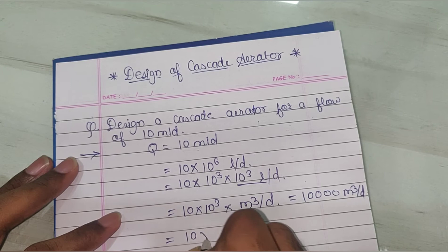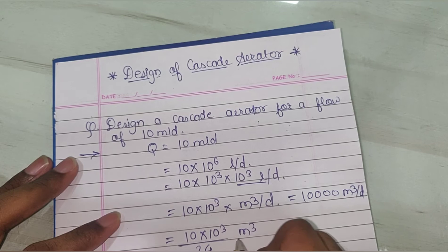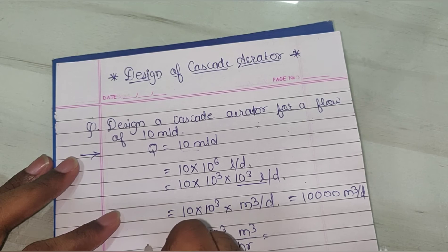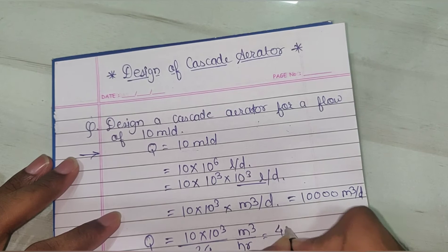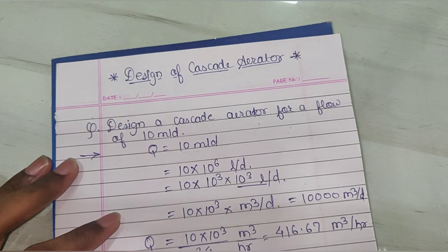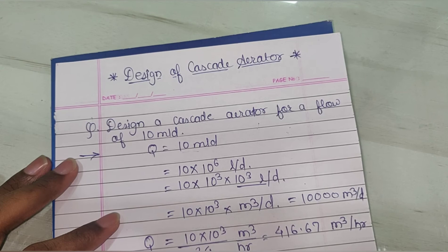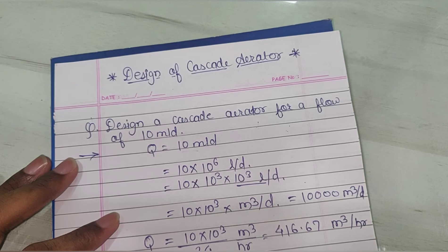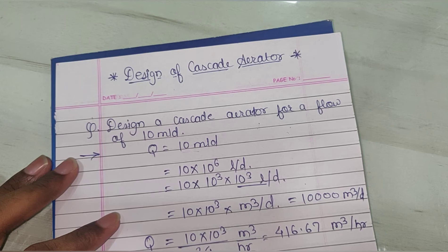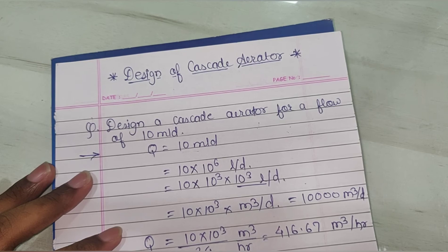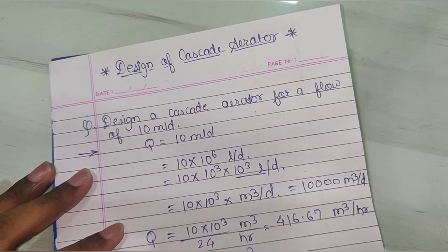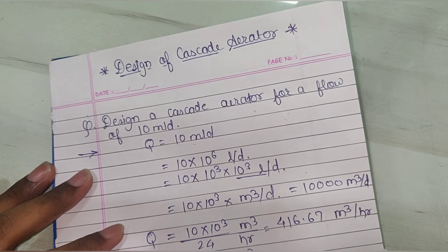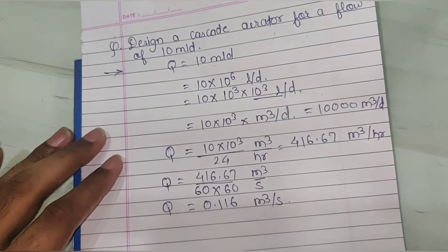Now I have to convert this value into meter cube per hour. So 10 into 10 raised to 3 divided by 24 gives the flow rate in meter cube per hour. After calculating this, you will get the value of Q as 416.67 meter cube per hour. Now we also need Q in meter cube per second. We know 1 hour equals 60 minutes and 1 minute equals 60 seconds, so dividing gives approximately 0.116 meter cube per second.